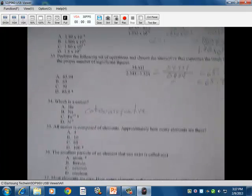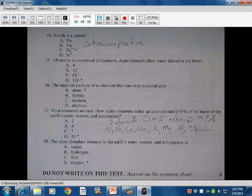34. Cations, which is a cation. Cations are positive. So it's Fe plus 3. All matters composed of elements. Approximately how many elements are there? So there's about a hundred. Give or take a couple that are man-made that exist, but they're approximately a hundred. The smallest particle of an element that can exist is an atom. So we have an element. The smallest part of an element that is still an element is an atom. Below that, if you get to the neutron, et cetera, they're no longer elements. They are subatomic particles that have not the properties of the element.